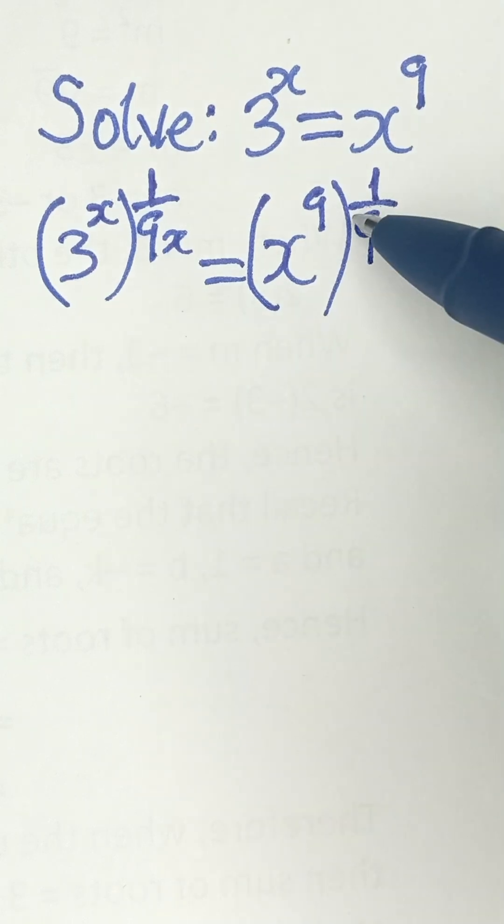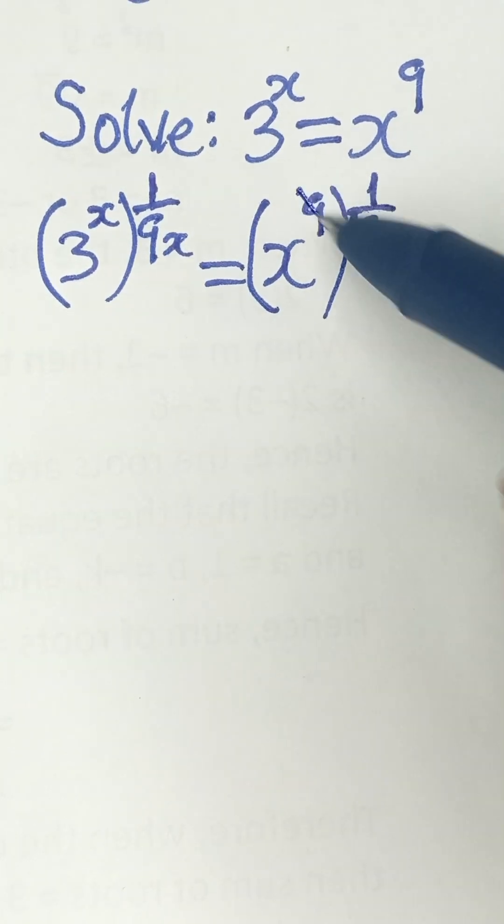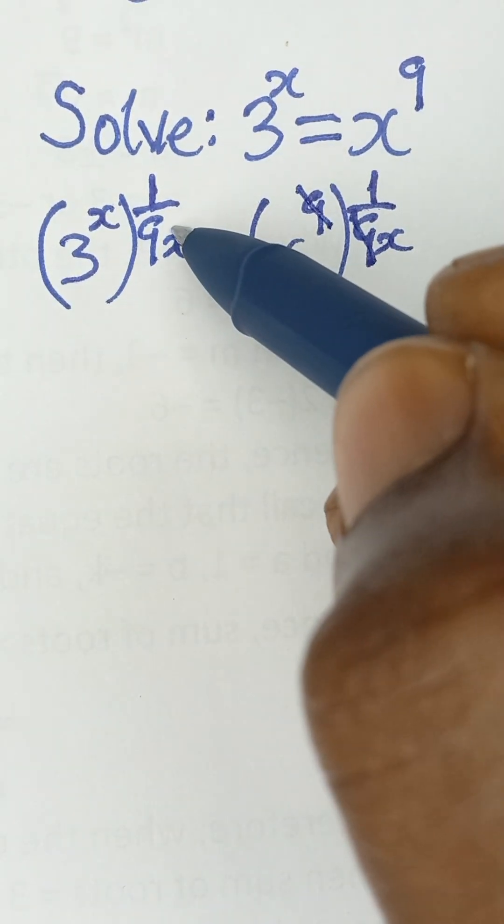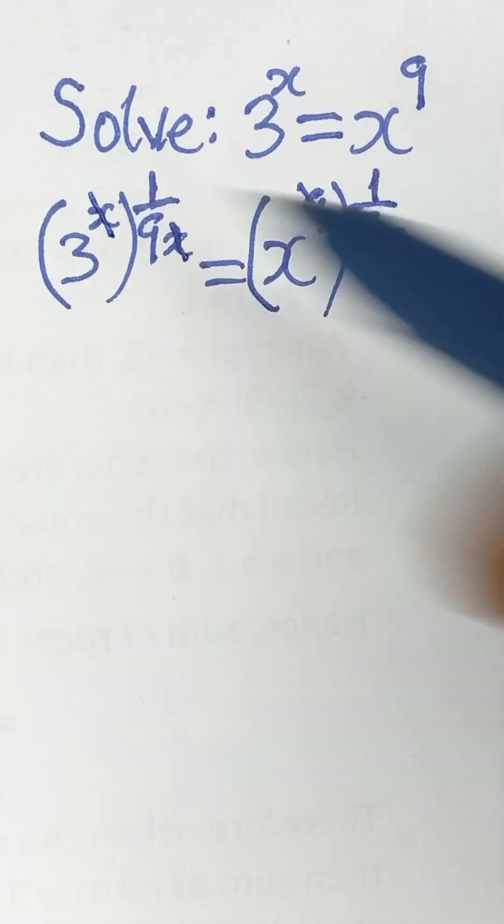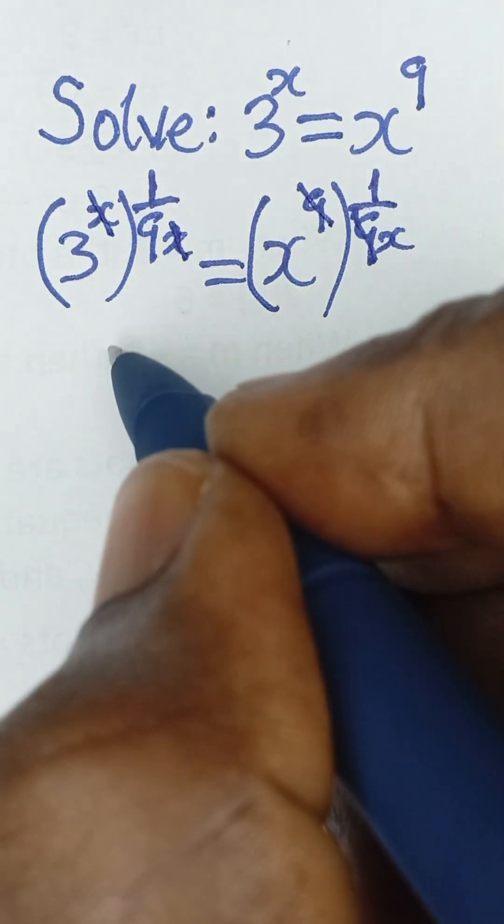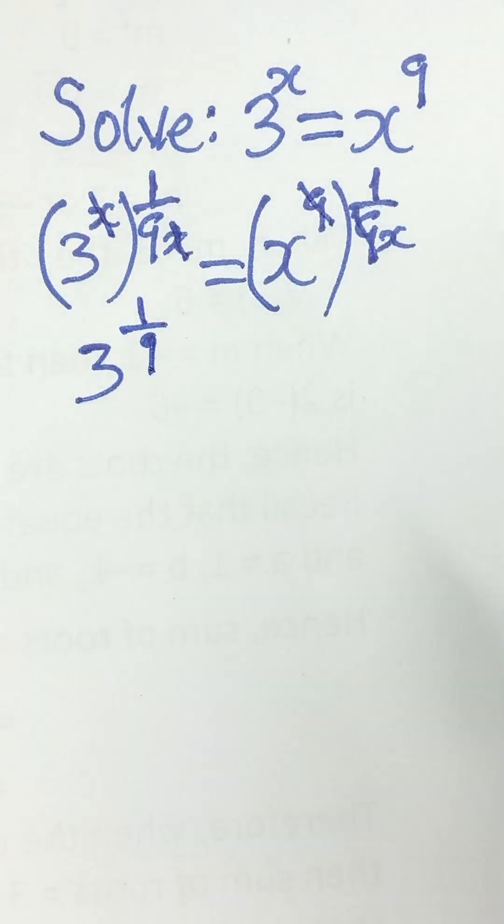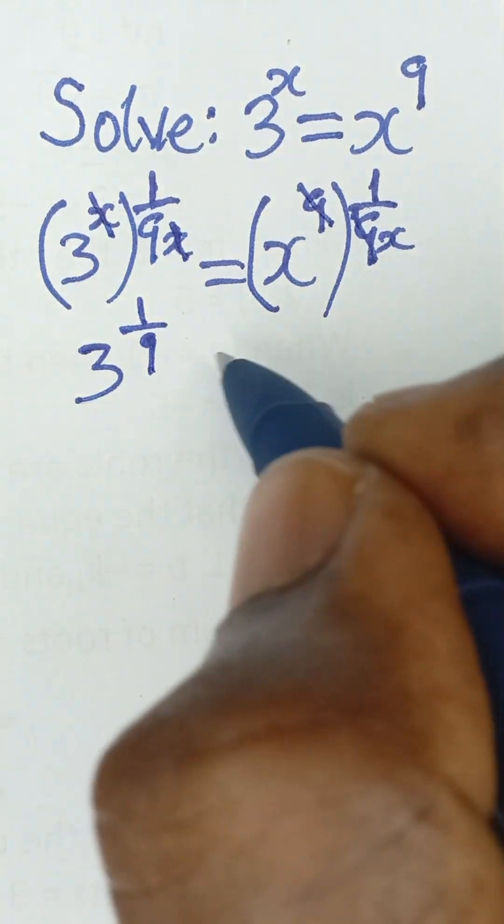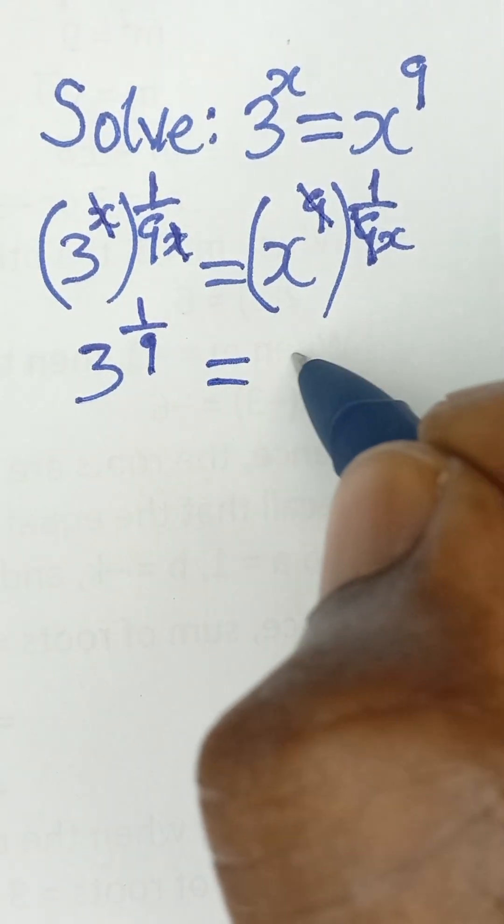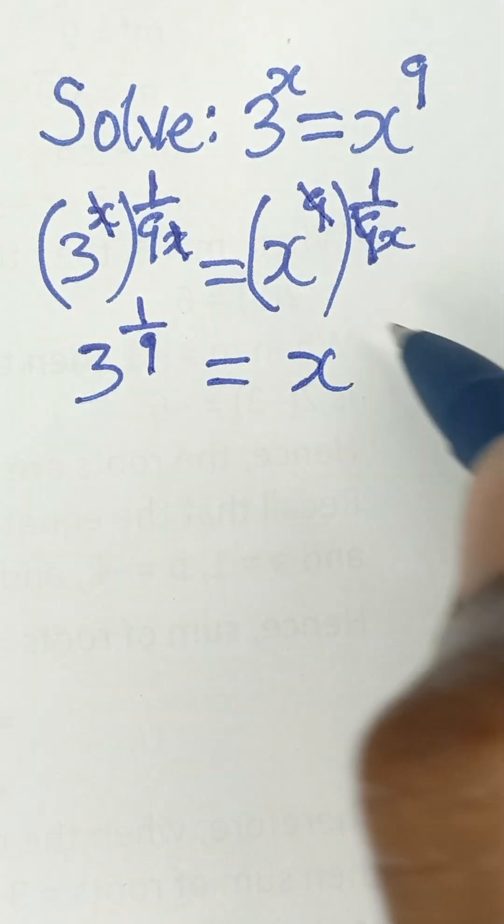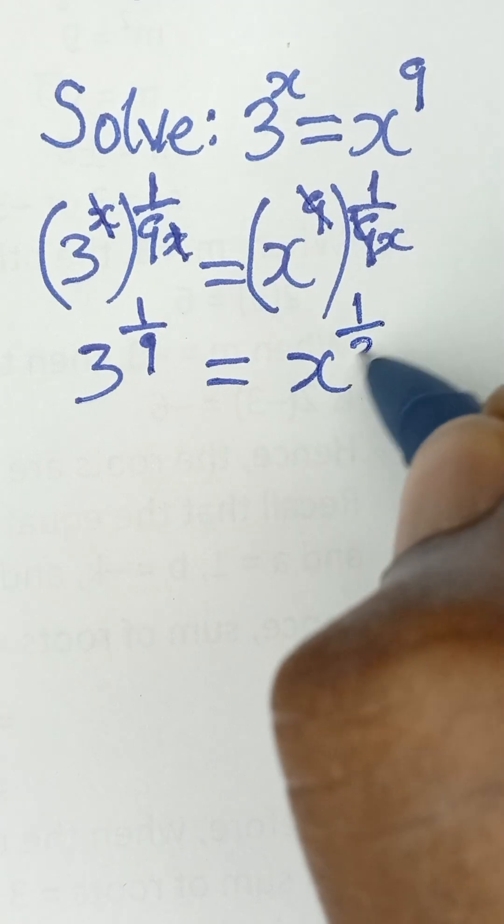So here, 9 we cancel 9. And here, x we cancel x. So we now have 3 raised to the power 1 over 9, and that will be equal to x raised to the power 1 over x.